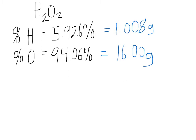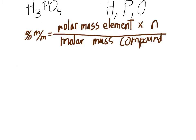Also, don't forget: if you find the percent by mass of every element in the compound and add them all together, it should equal 100%. So for hydrogen peroxide, adding 5.926% and 94.06% will give approximately 100%.